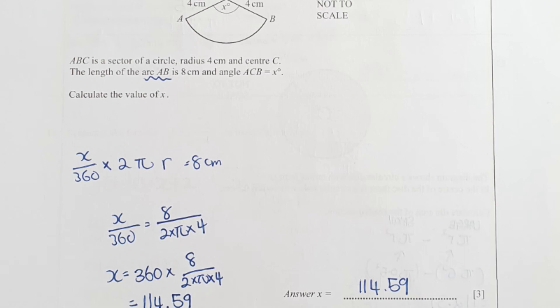For question 14, you are required to identify the value of x angle. So x over 360 times 2 pi r equals 8, because they gave you the arc length of AB as 8 cm. So after you run the calculation, you shouldn't be having an issue to identify that x equals 114.59.